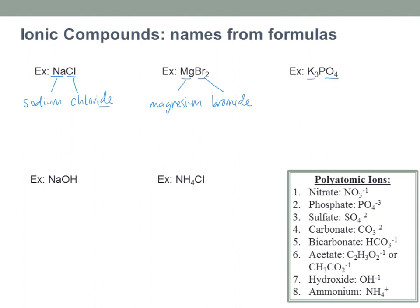K₃PO₄: K stands for potassium. I might be tempted to say 'phosphorus oxide' or something like that, but I need to recognize that PO₄ is a polyatomic ion — that's phosphate. So I don't say 'phosphorus oxide'; I say phosphate. So this is potassium phosphate.